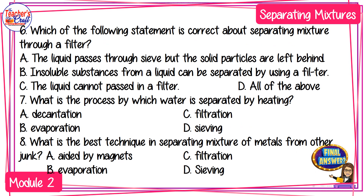Number 6: Which of the following statements is correct about separating mixtures through a filter? A) The liquid passes through but the solid particles are left behind. B) Insoluble substances from a liquid can be separated by using a filter. C) The liquid cannot pass through a filter. Number 7: What is the process by which water is separated by heating? A) decantation, B) evaporation, C) filtration, or D) sieving. Number 8: What is the best technique in separating a mixture of metals from other junk? A) aided by magnets, B) evaporation, C) filtration, or D) sieving.